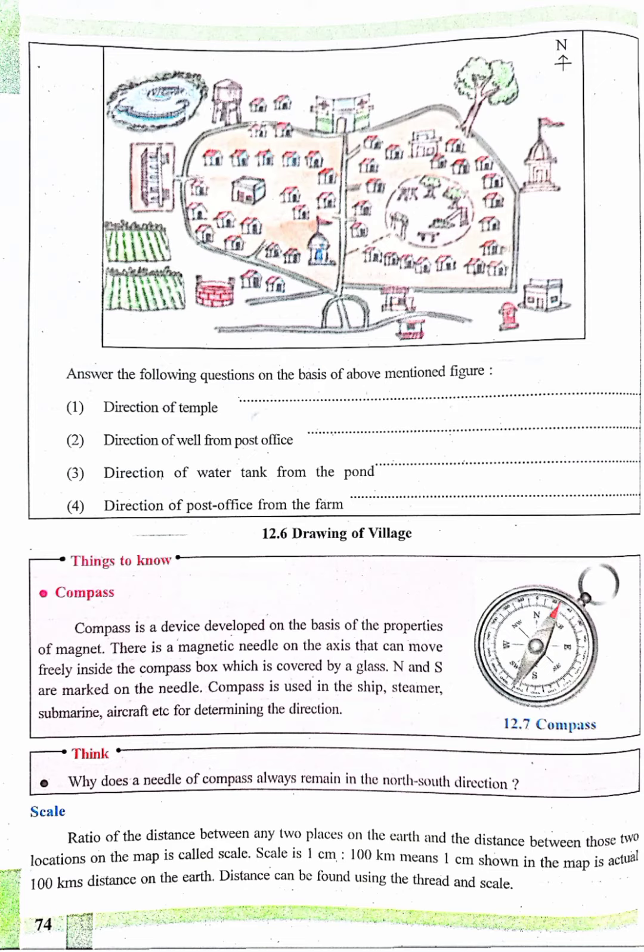N and S are marked on the needle. Compass is used in the ship, steamer, submarine, aircraft, etc. for determining the direction.